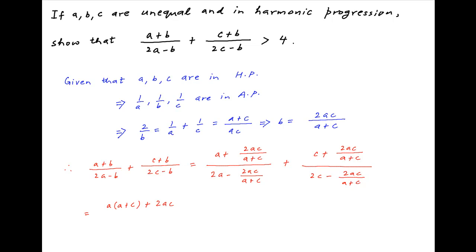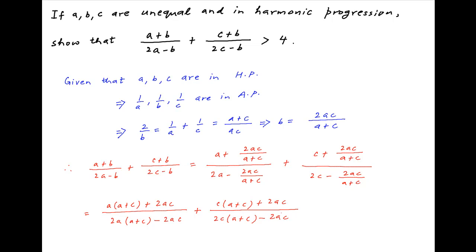This can be written as [a(a + c) + 2ac] / [2a(a + c) − 2ac] plus [c(a + c) + 2ac] / [2c(a + c) − 2ac].